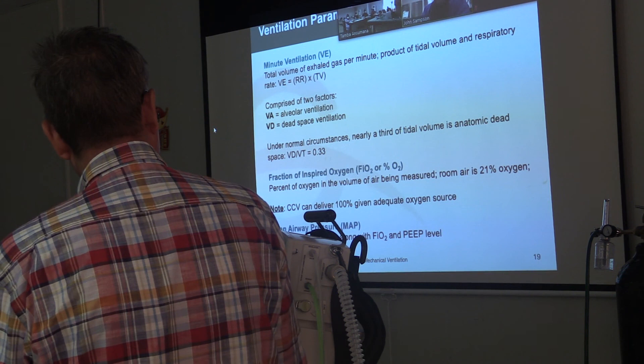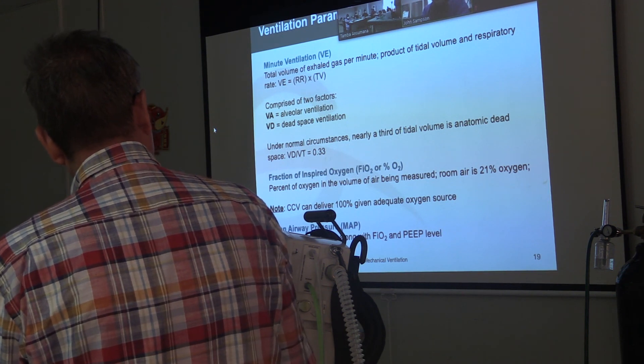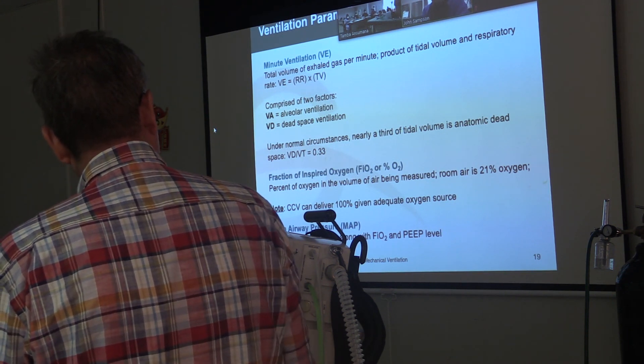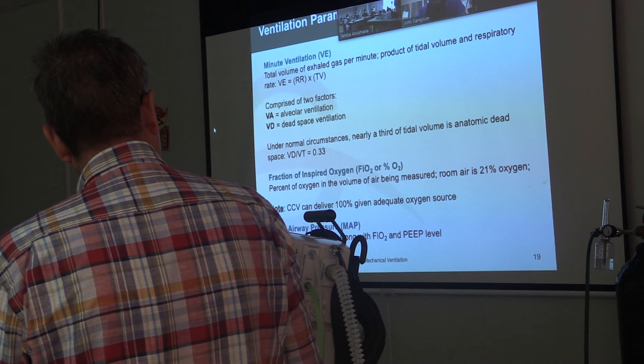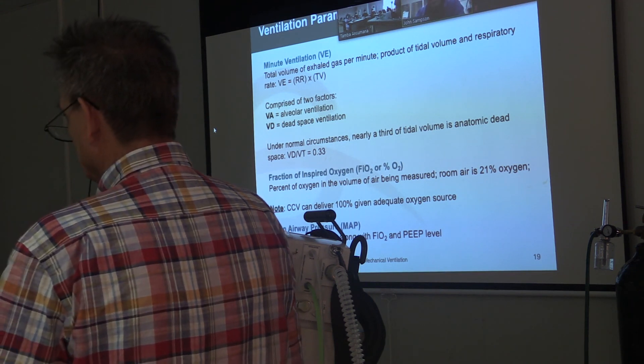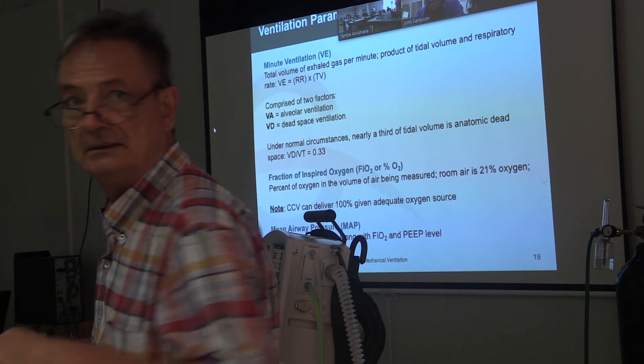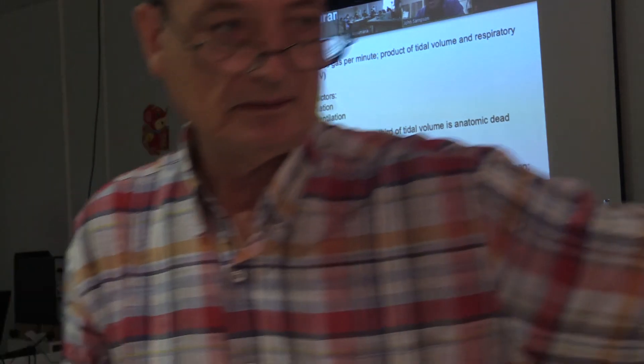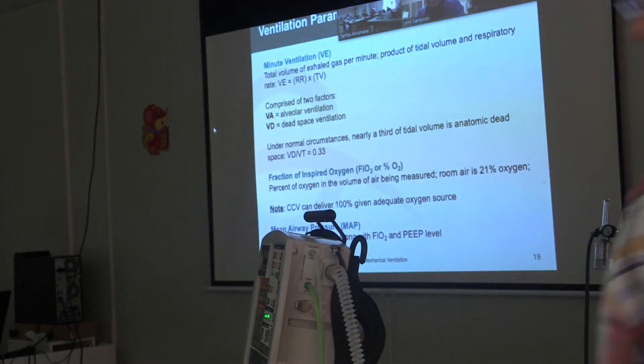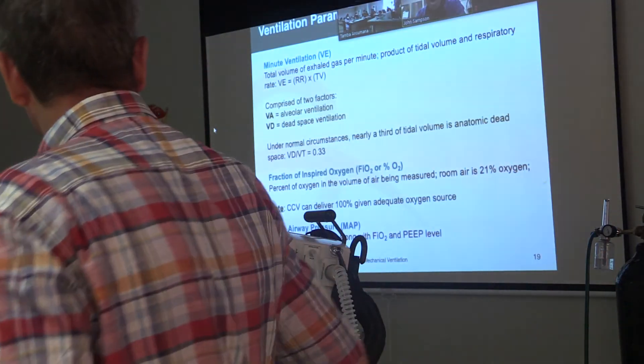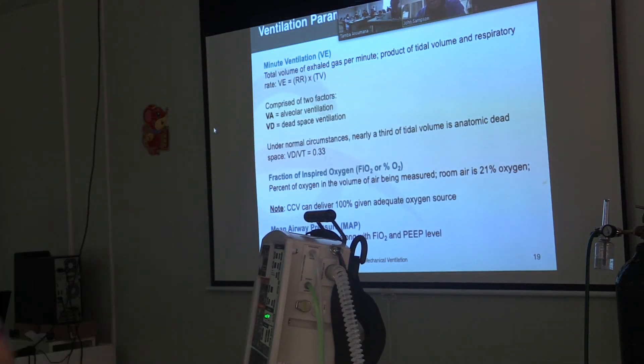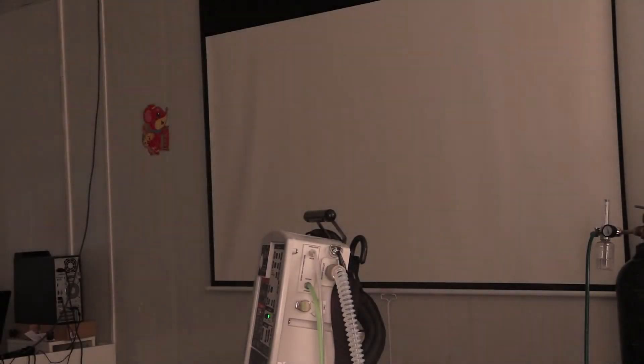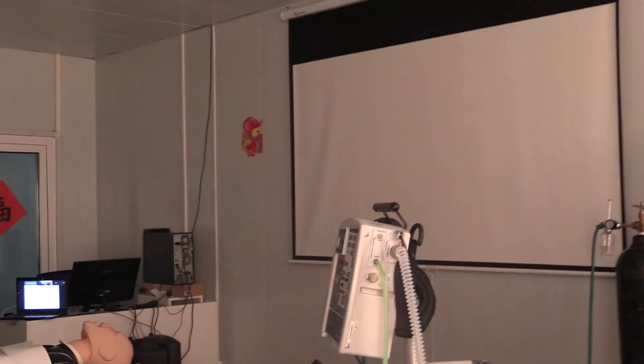The fraction of inspiratory oxygen, we talked about that. That's the amount of oxygen that you're delivering to the patient. It's calculated on this machine because the machine itself does not have a monitor monitoring the amount of oxygen. So it's calculating that depending on the different settings that are being given.